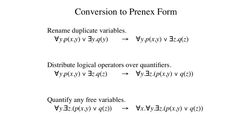Converting a set of sentences to a logically equivalent set in prenex form is really easy. First, we rename the variables in different quantified sentences to eliminate any possible duplicates. So in the example shown here, we rename the variable Y in the second disjunct.